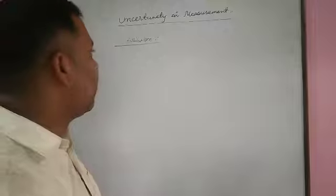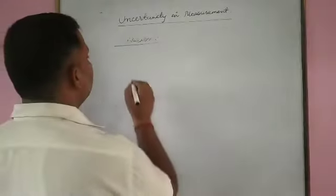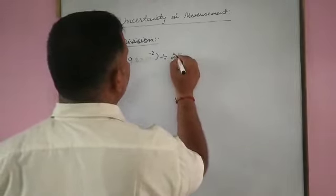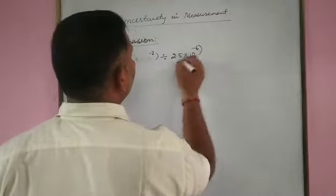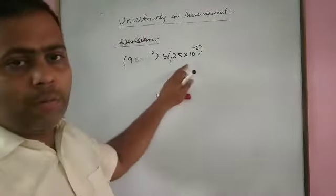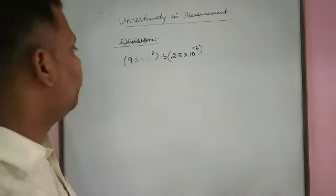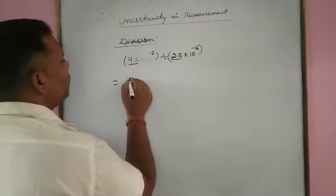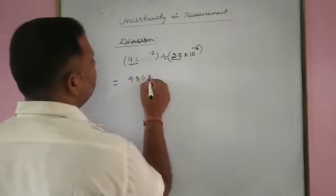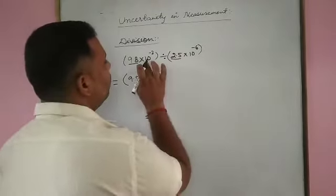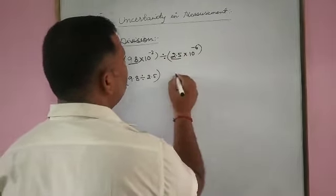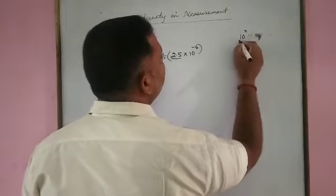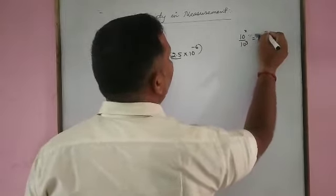Now let us divide by carrying scientific notation. If we have a number such as 9.8 into 10 to the power minus 2, divided by 2.5 into 10 to the power minus 6. First, we take the digit terms: 9.8 divided by 2.5. For the exponent term, we know that 10 to the power x divided by 10 to the power y equals 10 to the power x minus y.